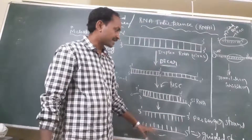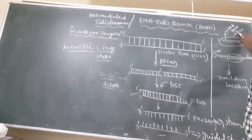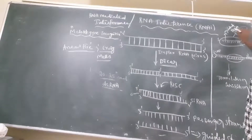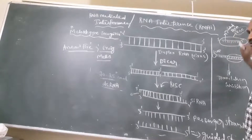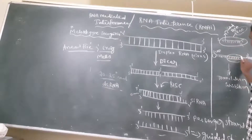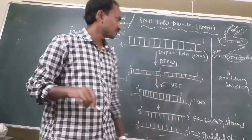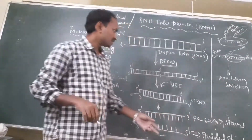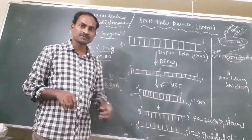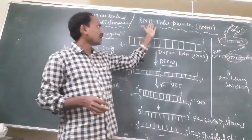The passenger strand is later degraded, but the guide strand forms a complex with the RISC protein — the RNA-Induced Silencing Complex, which is a group of proteins. The guide RNA and RISC complex together go and bind to the complementary sequence in the target mRNA, inducing inhibition of translation and protein formation. This is how small RNA molecules inhibit translation and gene expression — that is why it is called RNA interference.